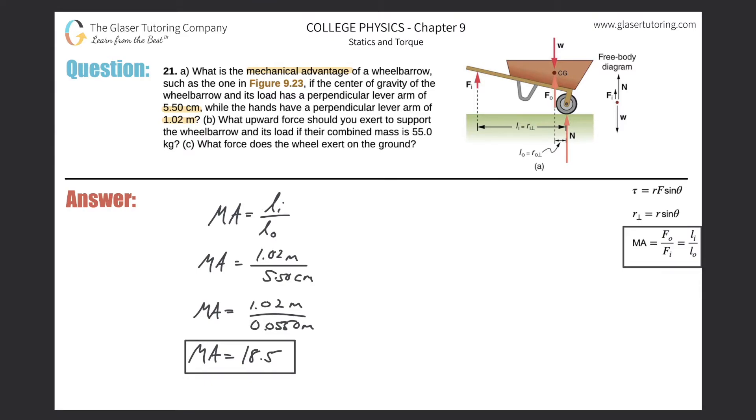So that's the mechanical advantage, that takes care of part A. Why don't we take a look at part B. It says what upward force should you exert to support the wheelbarrow and its load if their combined mass is 55 kilograms? So it's saying that the combined mass of whatever contents are in the wheelbarrow and the wheelbarrow itself, which has a center of gravity right here, if their contents have a mass of 55 kilograms.